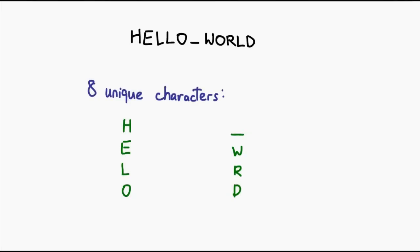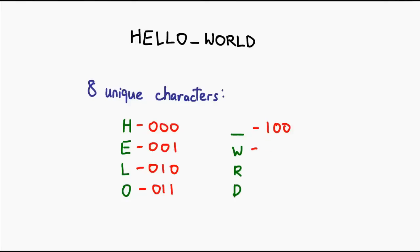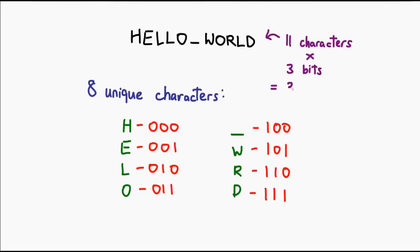Let's make things clearer by considering an example. I have a very simple bit of text here that says "hello world." There are eight unique symbols in this text as shown on screen — this includes the space, which I've written as an underscore. Since there are eight unique characters, we can use three bits to represent each. Without Huffman coding, the total length of this text is 33 bits: 11 characters multiplied by 3 bits each.